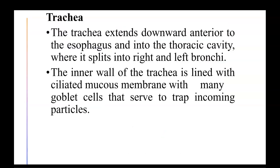The trachea extends downward anterior to the esophagus and into the thoracic cavity, where it splits into the right or left bronchi. The inner wall of the trachea is lined with ciliated mucous membrane containing many goblet cells, which create mucus important for trapping any inhaled particles.